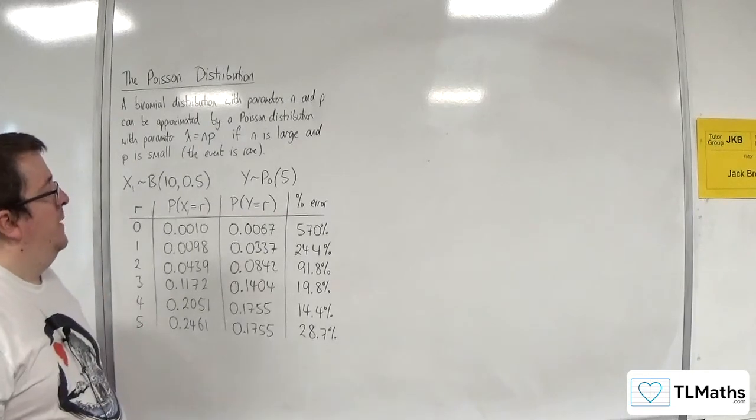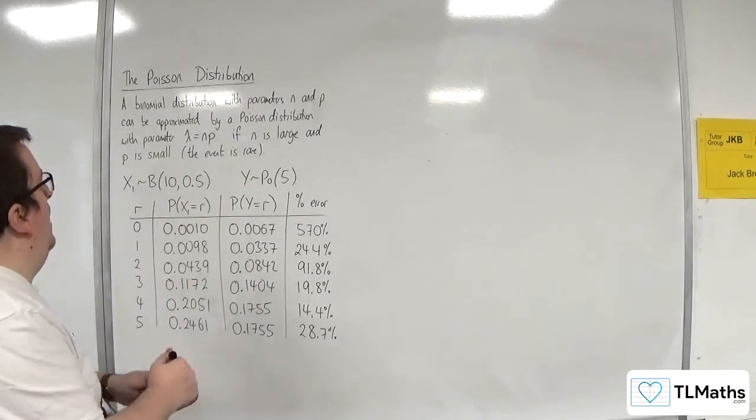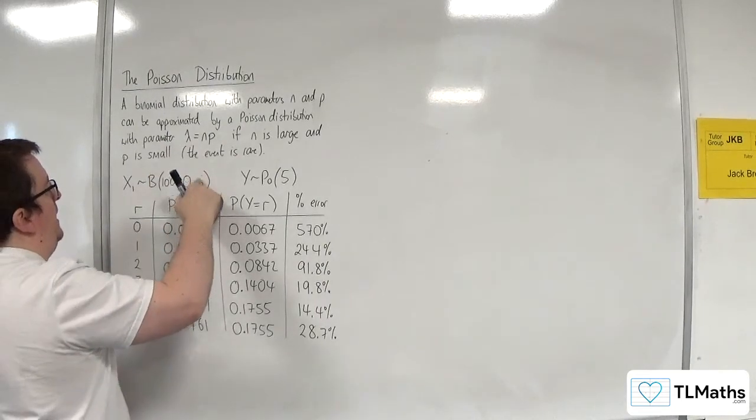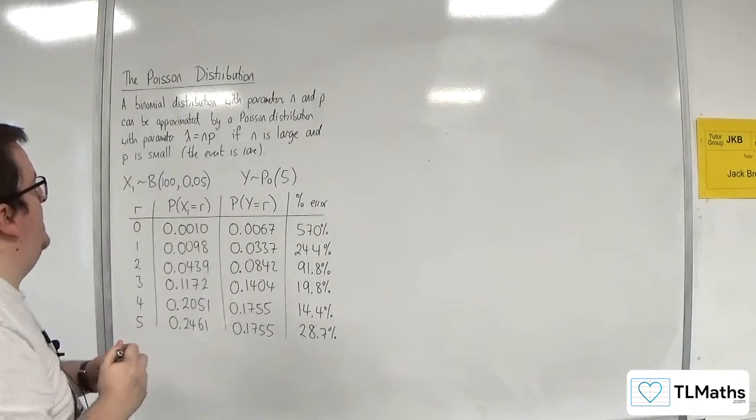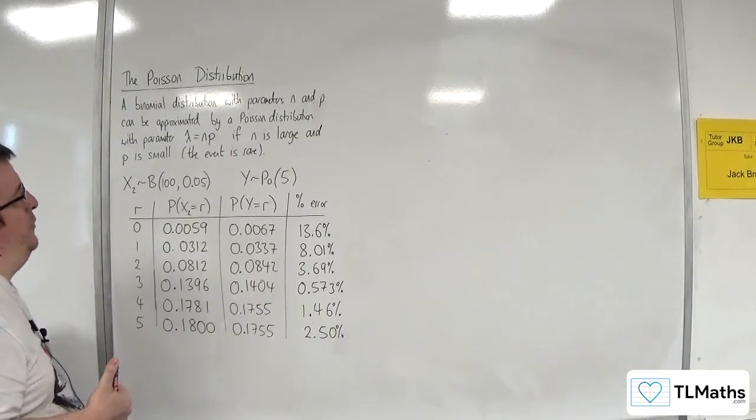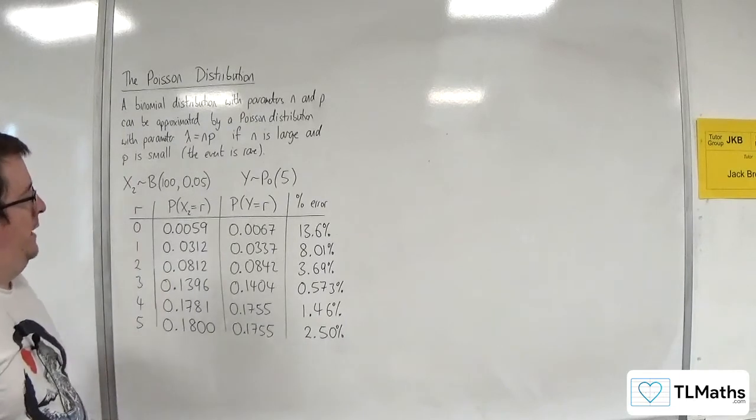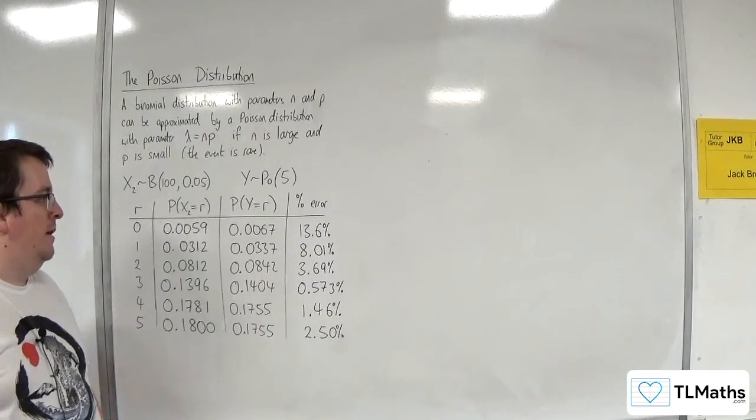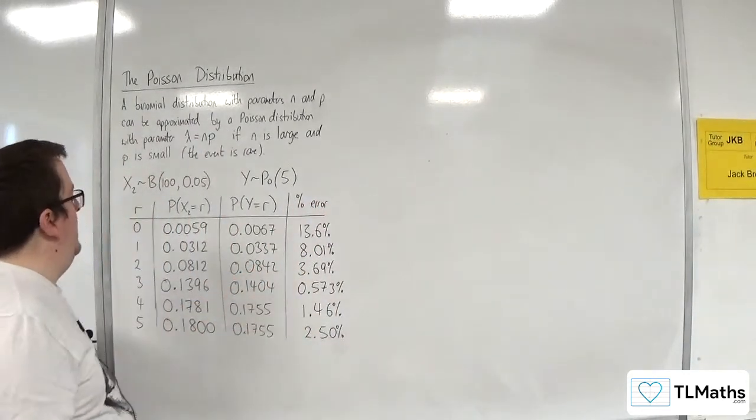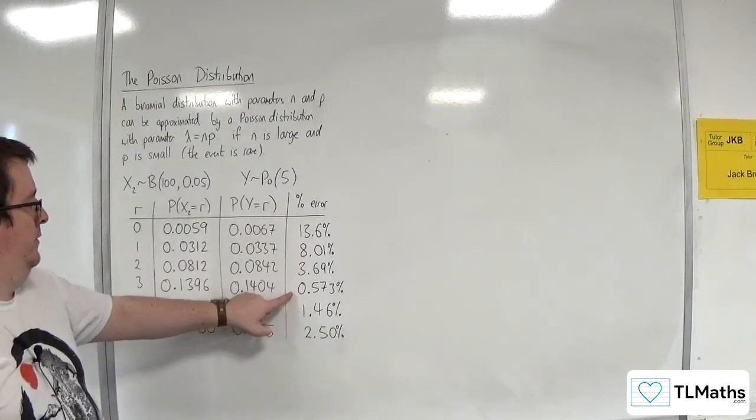So what we're going to do is we're going to change this up. We're going to keep with y being a Poisson distribution with lambda is 5. But what I'll do is I will change n here to 100, and p to 0.05. So n is now a factor of 10 larger, p is a factor of 10 smaller. So let's call this x2 now. So it's a binomial distribution where we've got 100 and 0.05. Here are the probabilities from r0 up to 5, and here are our new percentage errors. You can see that there's been a marked decrease in the percentage error, whereas previously we had 570%. We're now down to 13.6%. Still not brilliant, especially at the start. Some of these are very close. 0.573% there.